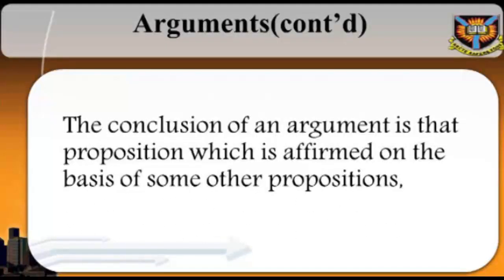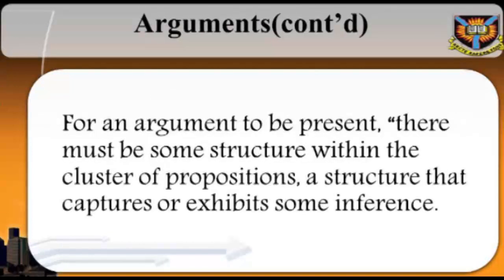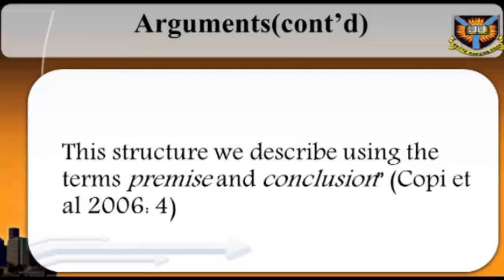The conclusion of an argument is that proposition which is affirmed on the basis of some other propositions, which serve as justification for the acceptance of the conclusion. These other propositions, which go by various names such as evidence, grounds, or reasons, are more professionally called premises. In an argument, therefore, the premises are intended to provide sufficient grounds for the acceptance of the conclusion. For an argument to be present, there must be some structure within the cluster of propositions, a structure that captures or exhibits some inference. This structure is described using the terms premise and conclusion.